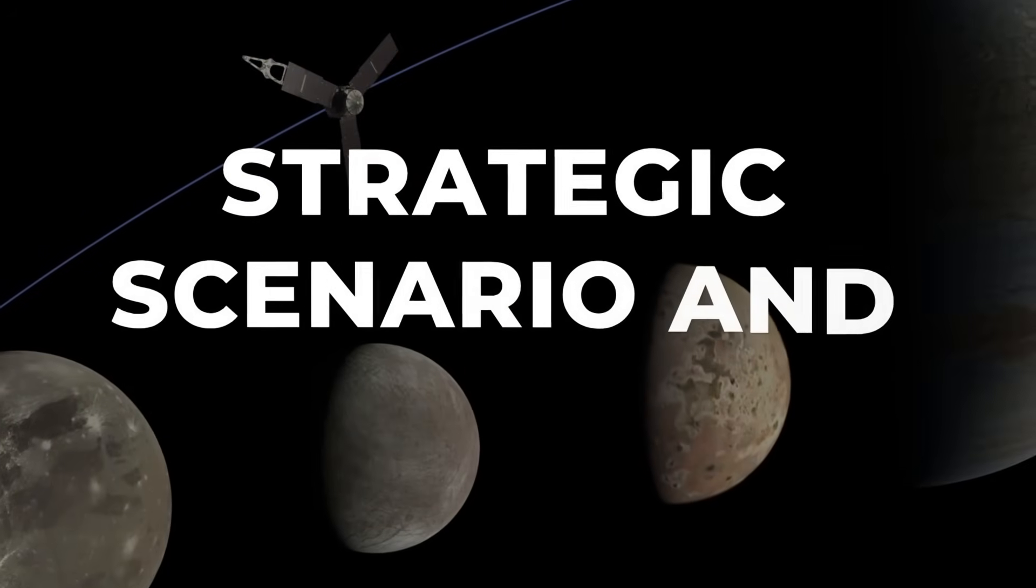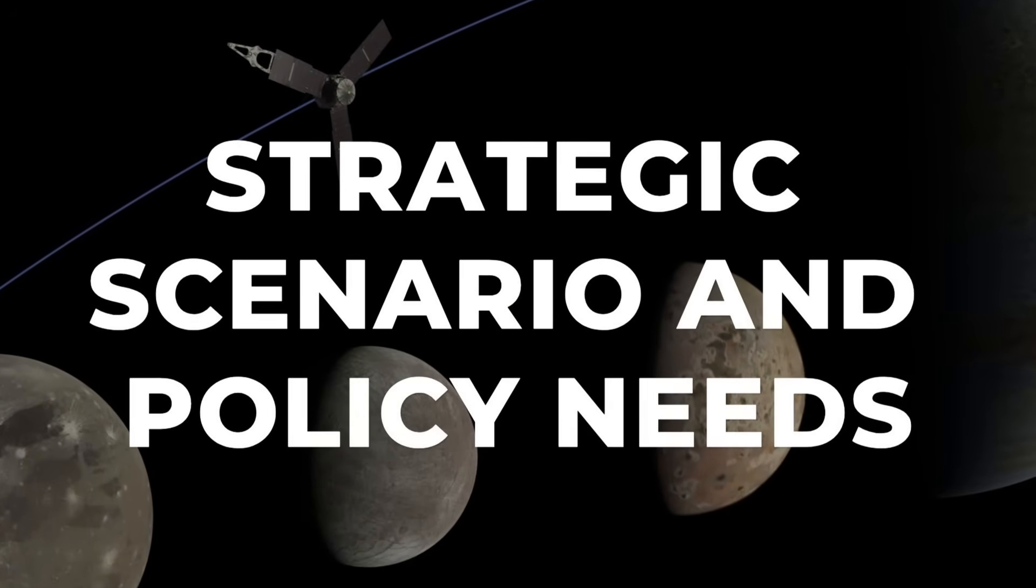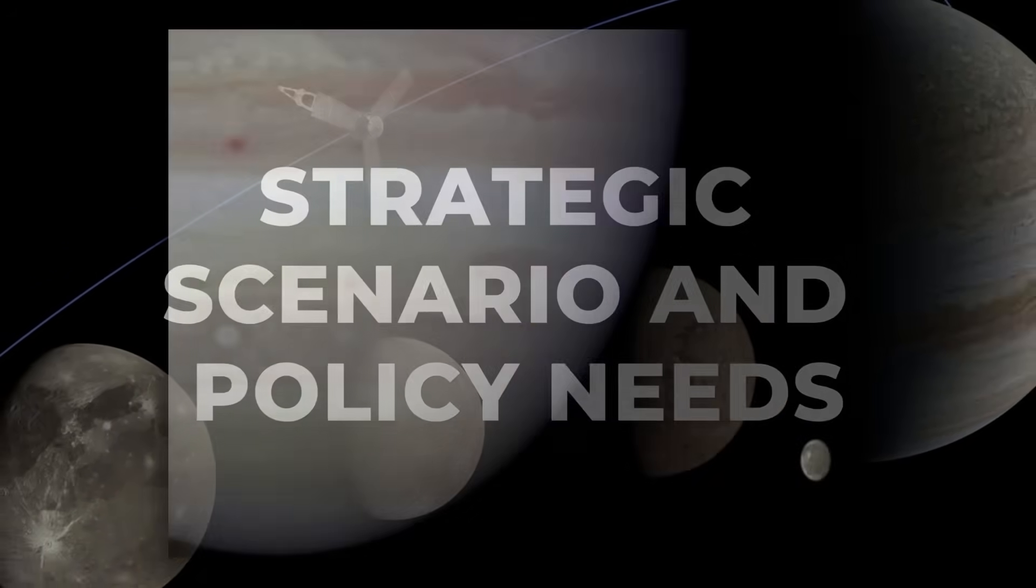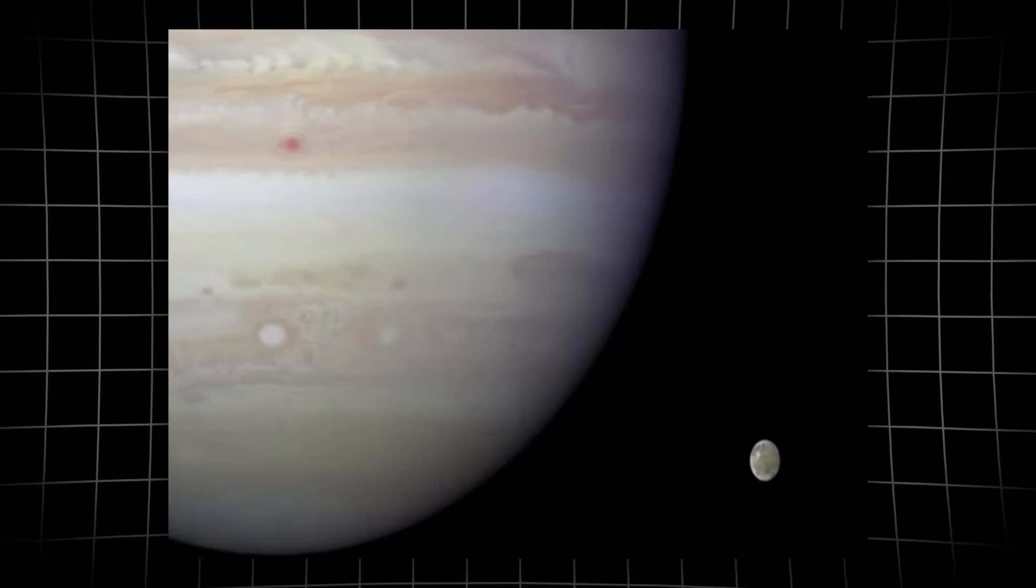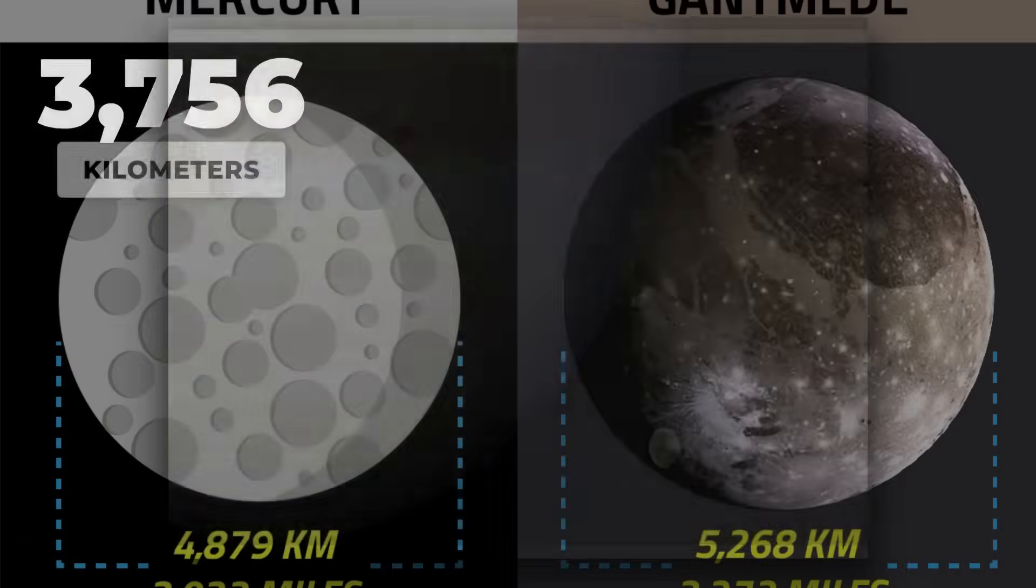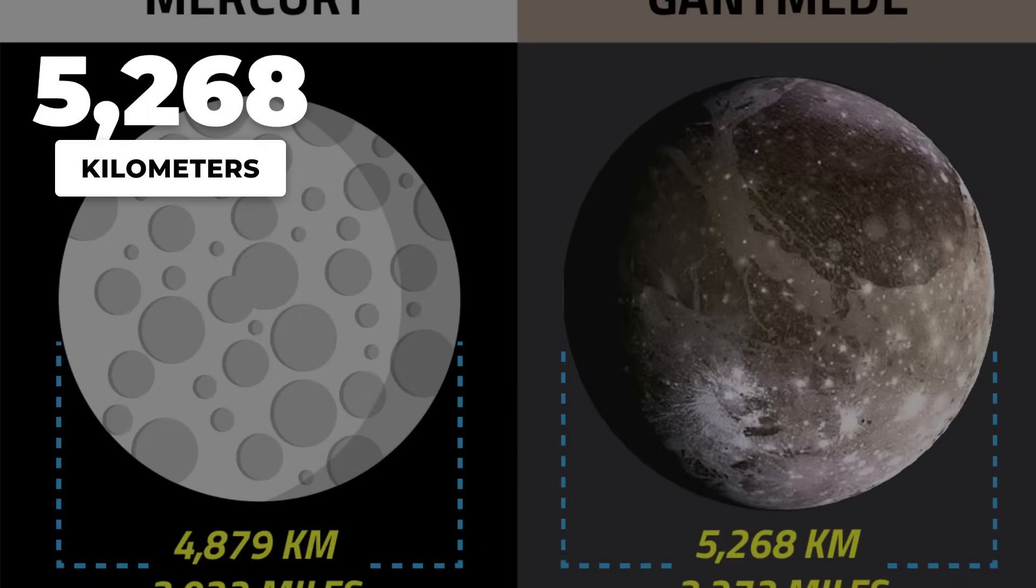If an advanced civilization set its sights on our solar system, Jupiter would be the logical beachhead. Ganymede, Jupiter's largest moon, offers a compelling combination of scale and resources.